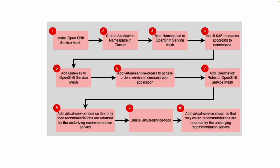There are going to be 10 steps. The OpenShift service mesh will already be installed at the start, then we're going to create an application namespace and bind it to the service mesh. Then we're going to install the Kubernetes resources: the orders service and deployment, the payment service and deployment, and the recommendations service along with the recommendations food and recommendations music deployments.